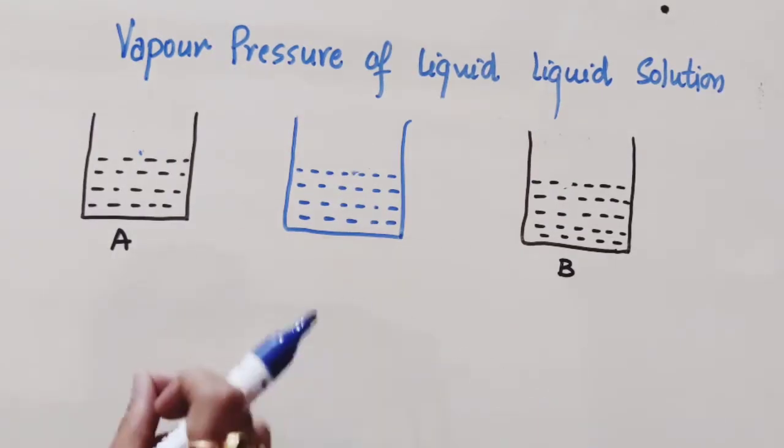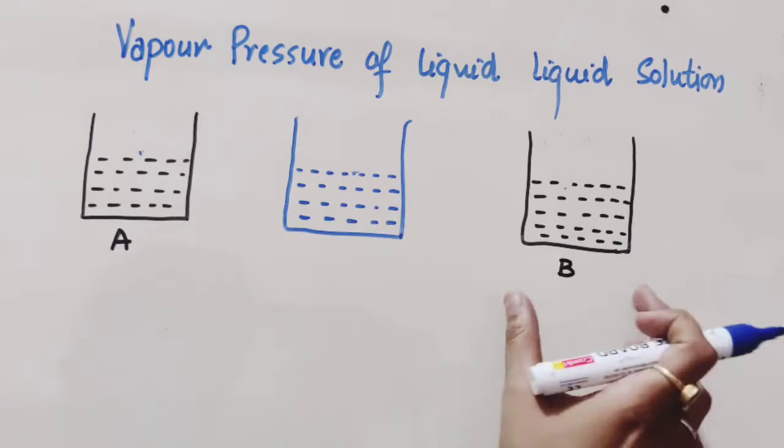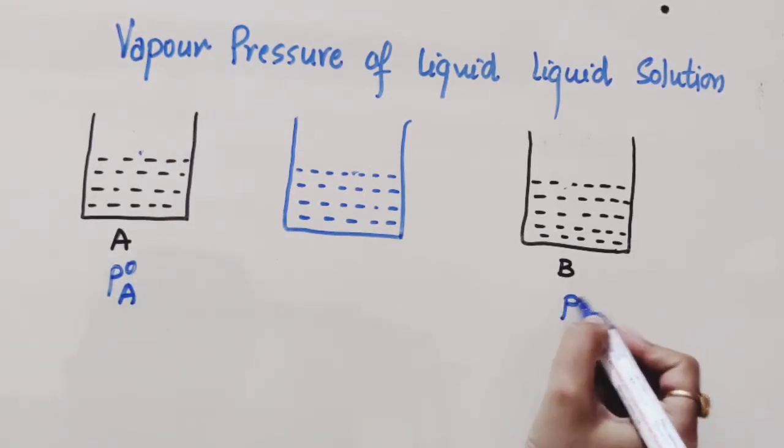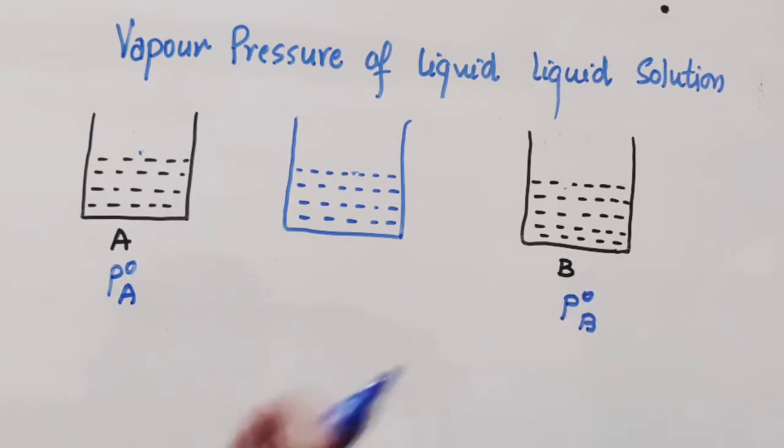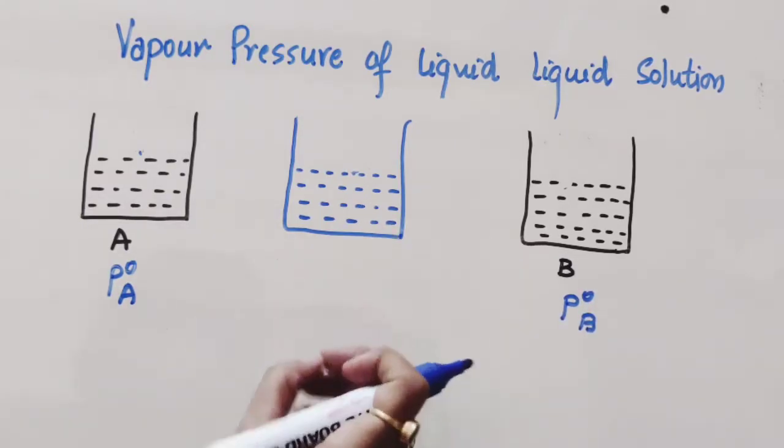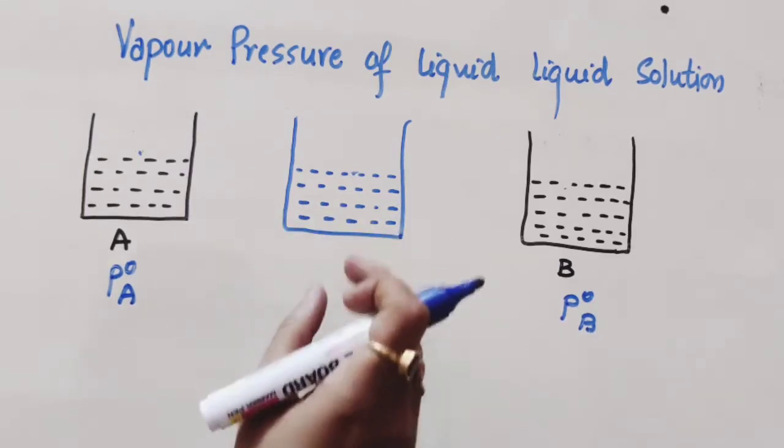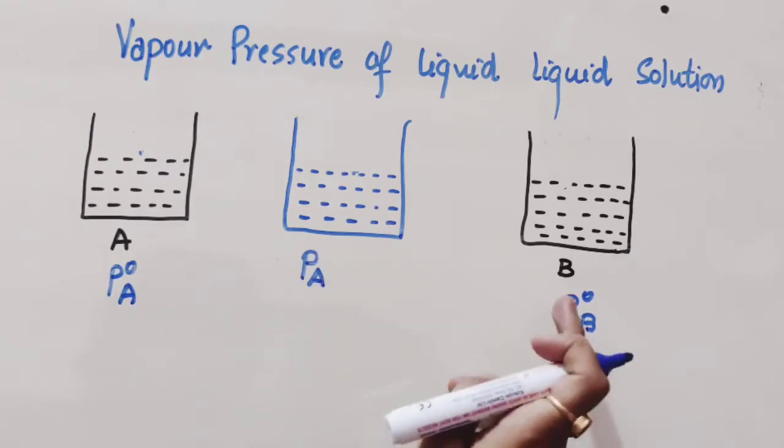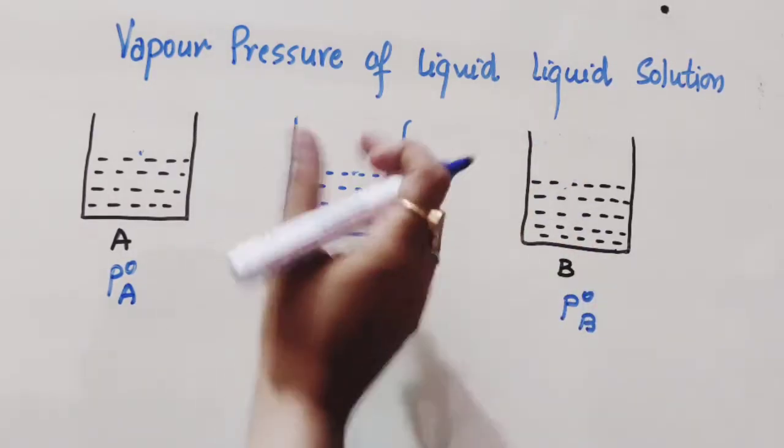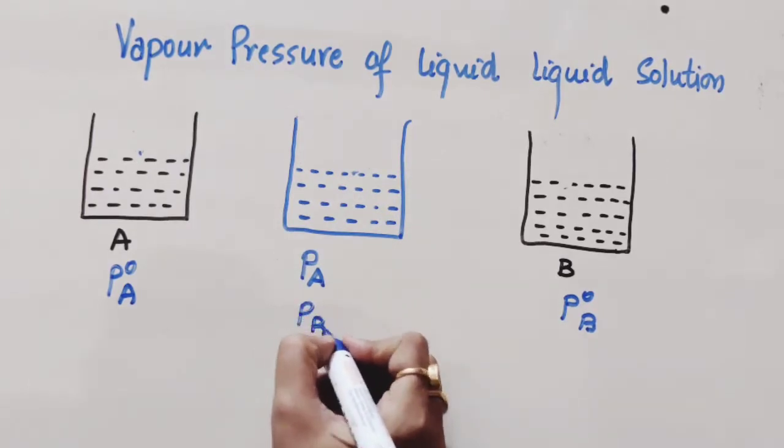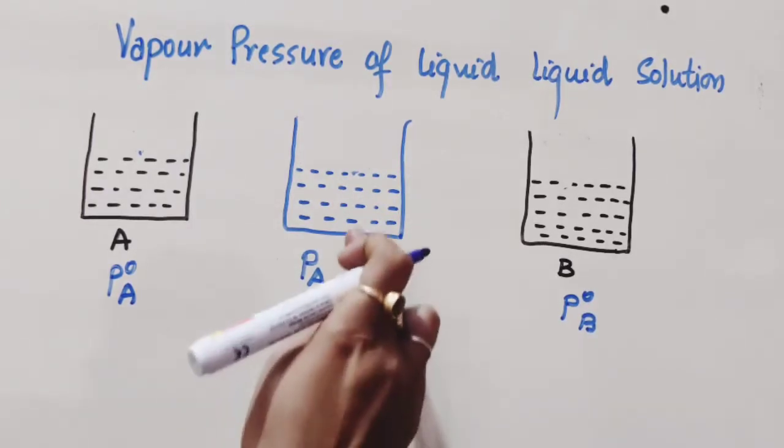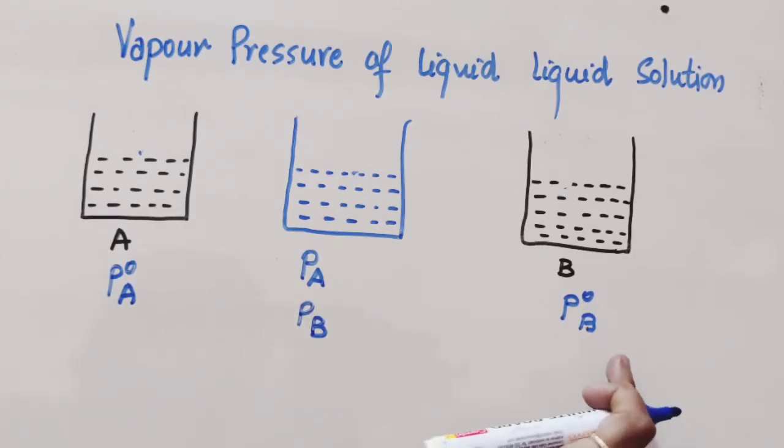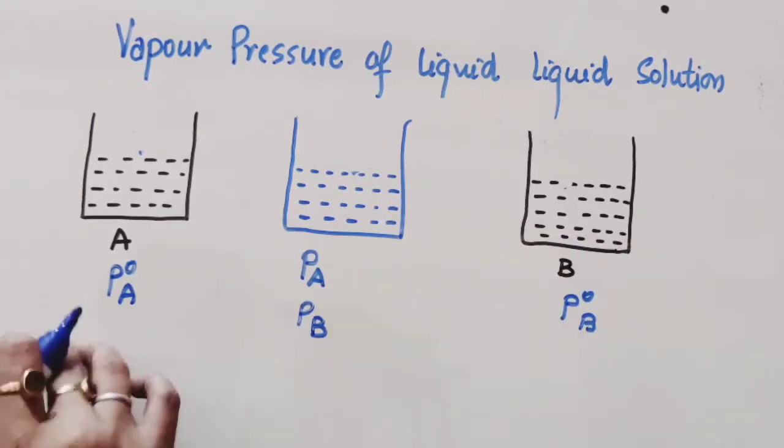So again I am repeating: we have taken one solution A pure liquid, B pure liquid. So pressure of pure liquid A is P⁰A, pressure of pure liquid B is P⁰B. When we mix these two solutions, in this new solution pressure of A will be exerted but it will be represented by PA, and similarly B's pressure in this liquid will be represented by PB. So this is known as partial vapor pressure. P⁰A or P⁰B is the pure vapor pressure of pure components A and B.